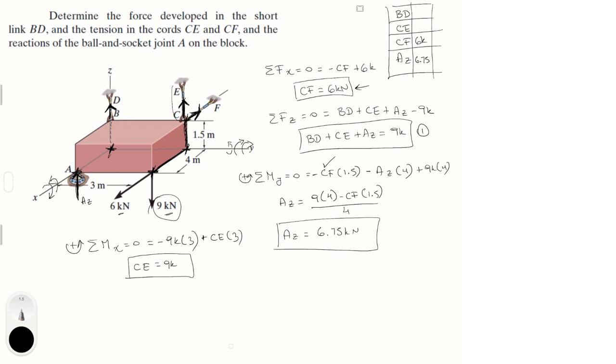And if we plug CE into equation 1 and AZ we plug it into equation 1 and we solve for BD, we get that BD is equal to 9 kN minus AZ minus CE. We plug the values that we found in and we get that BD is equal to negative 6.75 kN. So BD is negative 6.75, CE is 9, CF is 6, and AZ is 6.75, all in kN final answer.